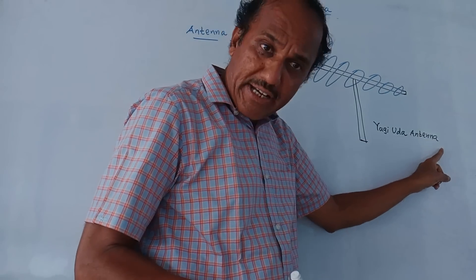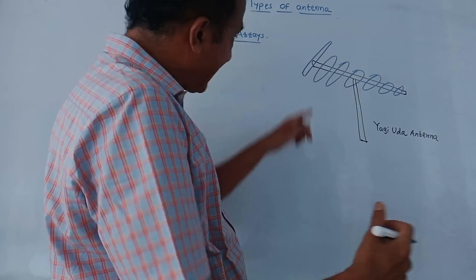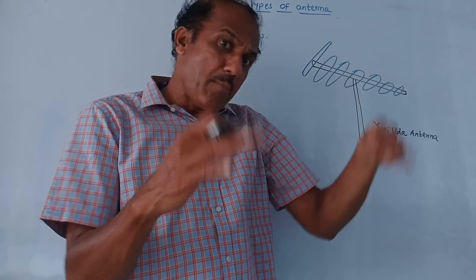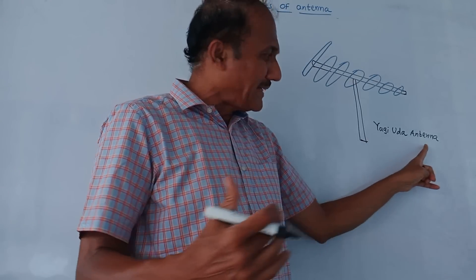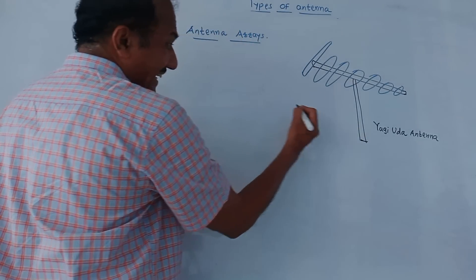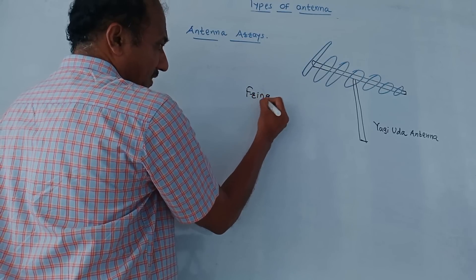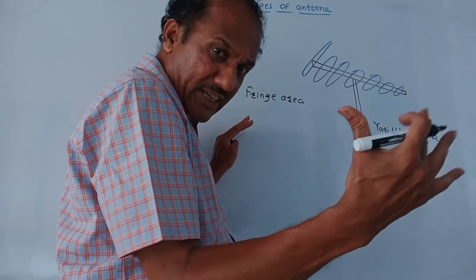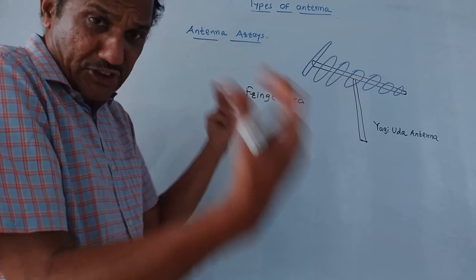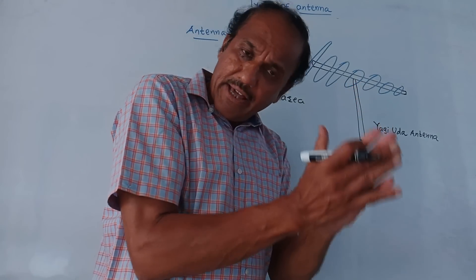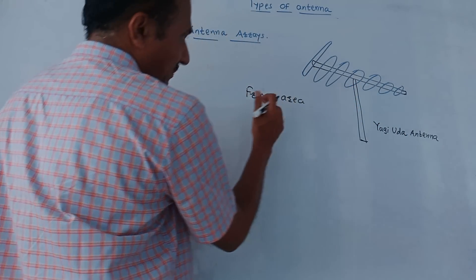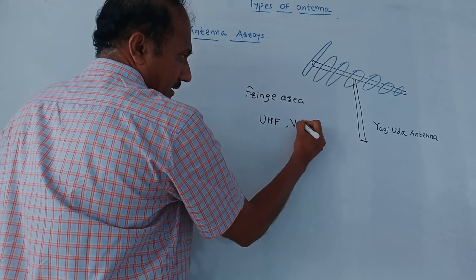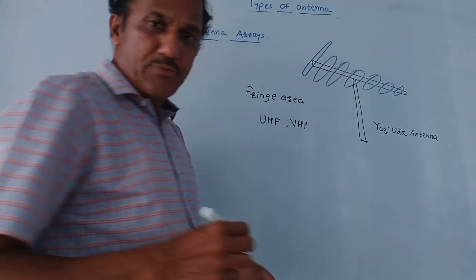A common example is the Yagi-Uda antenna, which consists of a number of directors stacked together to obtain improved directivity and gain. This antenna is especially used in fringe areas — areas where signals are very weak. Due to the multiple antenna structure, it provides large gain and large directivity. Yagi-Uda antennas are used in the ultra high frequency (UHF) and very high frequency (VHF) range for the reception of television signals.